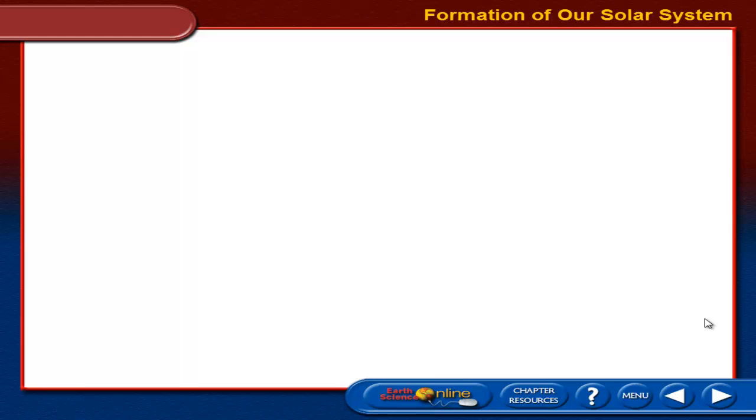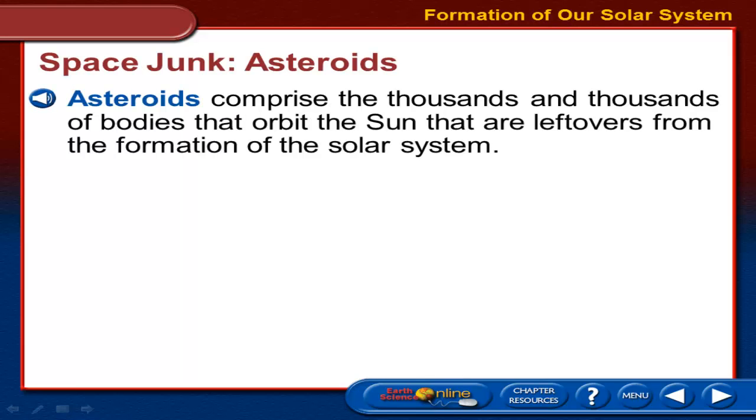This is the last broadcast of the unit. We've covered the models, we've covered the astronomers and their different laws that govern how things move, we've studied how the solar system formed and the planets. This is basically everything that's left over — the space junk. That covers a lot of little things. Let's start off with asteroids.